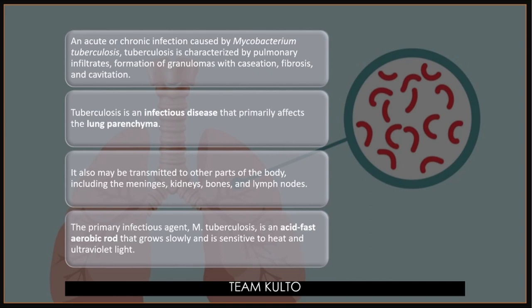The primary infectious agent is Mycobacterium tuberculosis. This is an acid-fast aerobic rod — meaning it requires oxygen. That is why on an x-ray you will notice whitish spots at the upper lung fields, because it requires oxygen and gravitates toward areas with more oxygen supply. It grows slowly and is sensitive to heat and ultraviolet light.